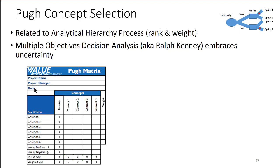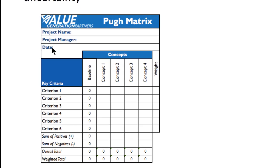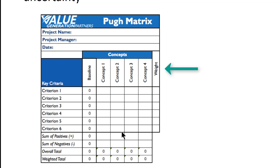The Pew concept matrix is something used frequently in systems engineering. As I understand it, you basically have different development plans — let's call these concept one to concept four — and then you have different criteria that are important to you. You give these a score, assign a weight to each one, and then calculate an overall score for each of the projects. This is a rank and weight approach, related to the analytical hierarchy process.